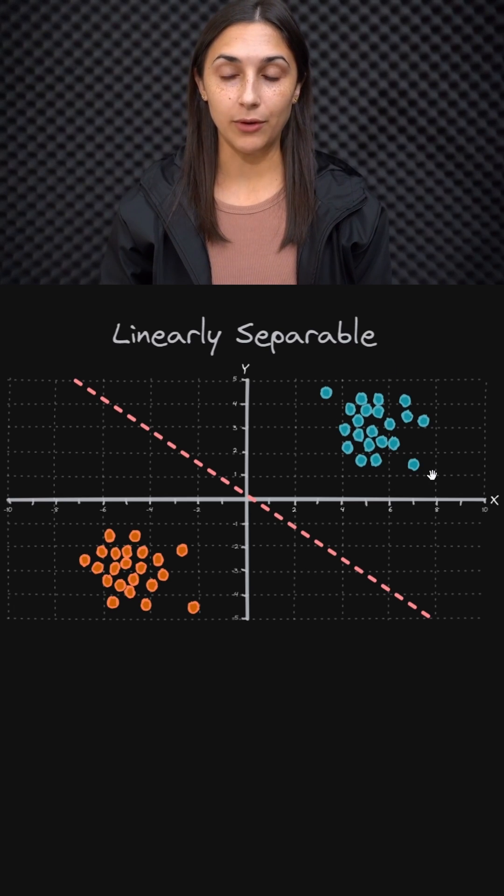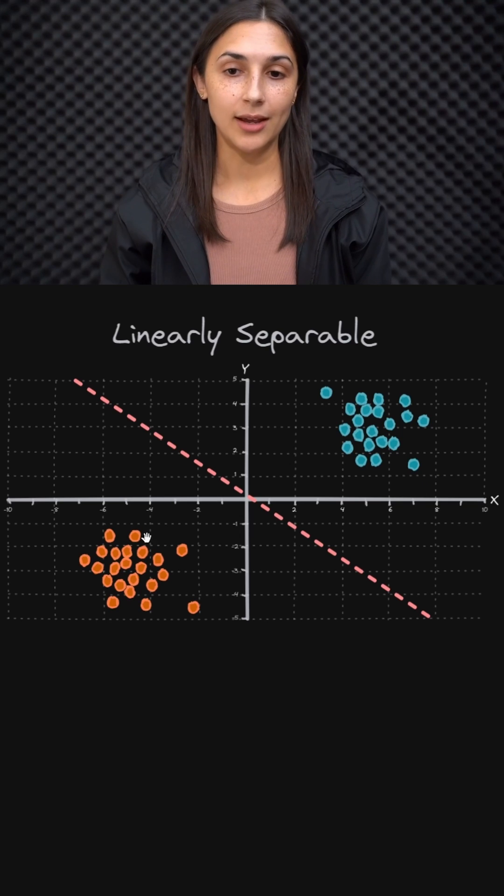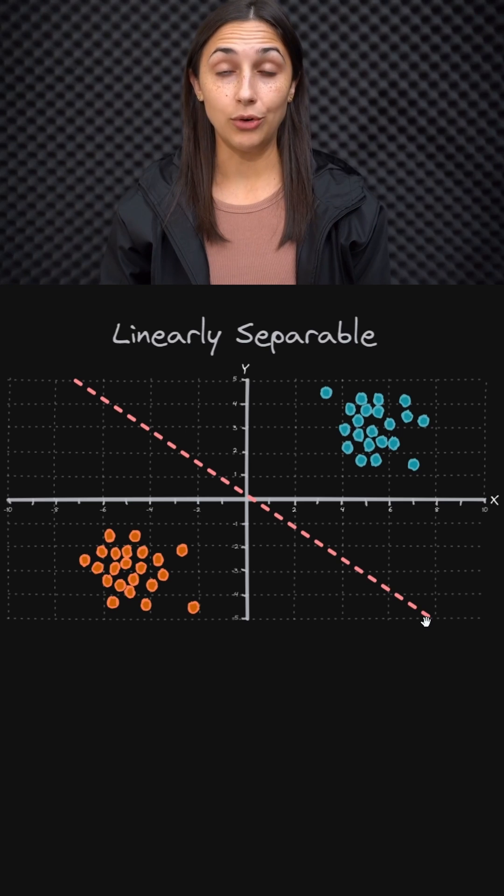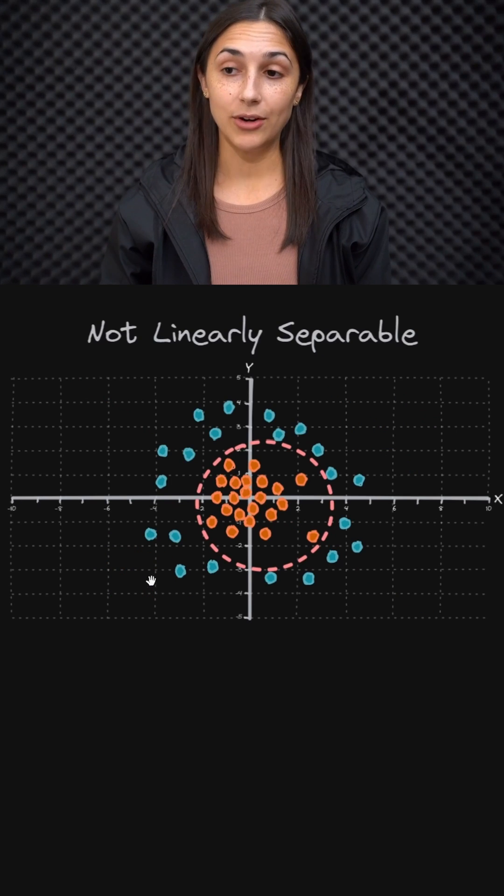And we can easily separate these two groups with a single line. If our data set looked like this on the other hand, it's impossible to accurately separate these two groups with just a line.